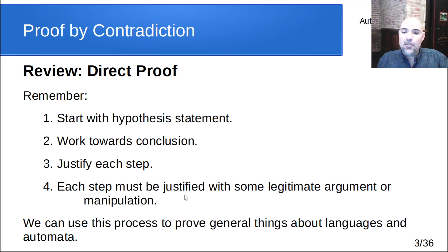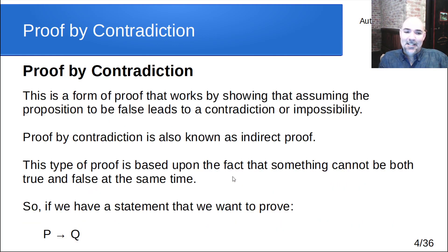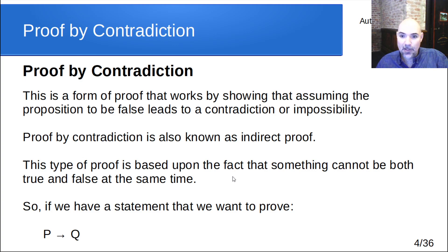We're going to use direct proof later on in the class to prove things about languages and automata. Now, what we're going to focus on today is another technique called proof by contradiction. The way proof by contradiction works is we start by assuming the negative of the proposition we're trying to prove — assuming it's false rather than true. Then we work towards showing that it cannot be true that it's false, which means therefore it must be true. Sometimes it's easier to do that than to prove something directly. This is also known as indirect proof, because we're not proving the actual claim itself — we're proving that the negation of the claim has to be false.